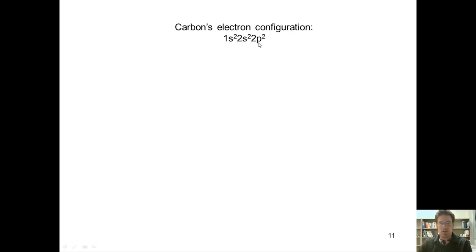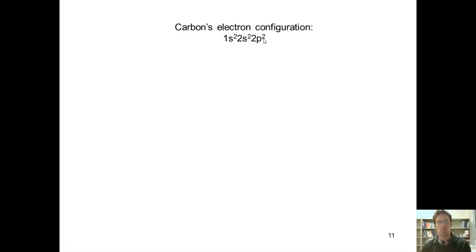Every element has its own electron configuration. Carbon's electron configuration is 1s² 2s² 2p². Carbon's valence orbitals are the ones with the highest number — this 2s orbital and this 2p orbital. Counting up the electrons occupying those, it adds up to 1, 2, 3, 4, so carbon has four total valence electrons.